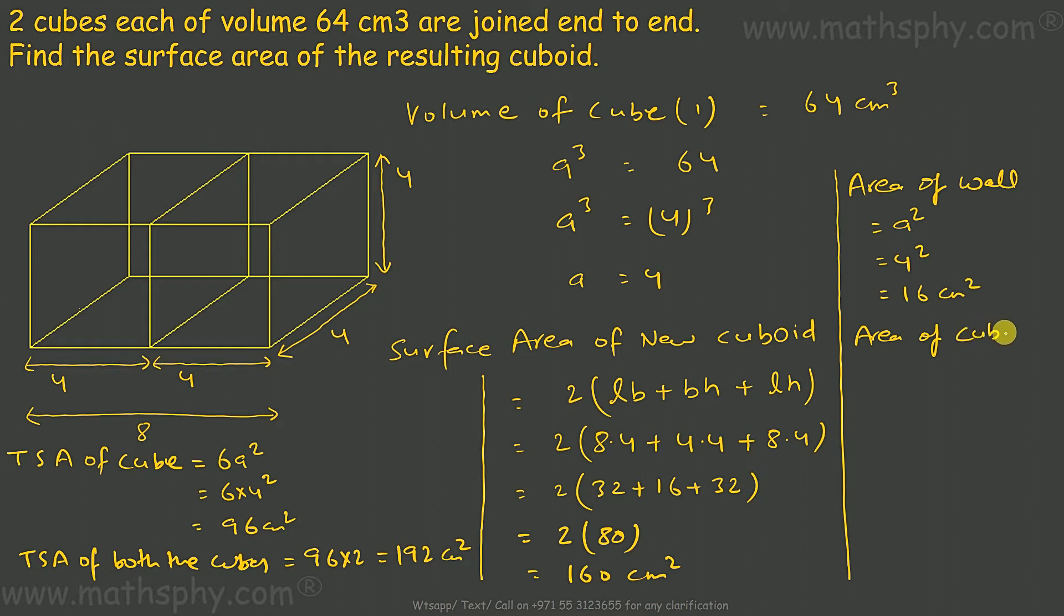Now the area of the cuboid by joining the cubes will be the total area which is 192, minus the overlapping wall. This wall is for this cube as well as for this cube, which means we have 2 walls.